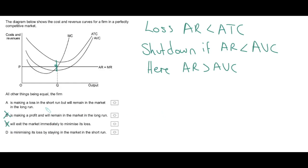What we're left with is the correct answer — either A or D — and a distractor. Option D says the firm is minimizing its loss by staying in the market in the short run. That seems correct. Going back to A: it's making a loss in the short run, yes, but will it remain in the market in the long run? We know from theory that staying in the long run depends on whether the loss continues over time. If losses continue they can't go on; they'll eventually shut down. We don't know that from this diagram. So what happens in the long run is uncertain, making A incorrect. D is 100% correct given the information and diagram we have.